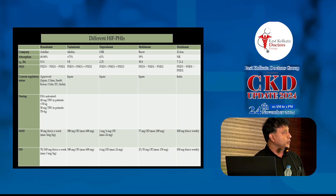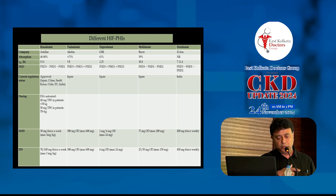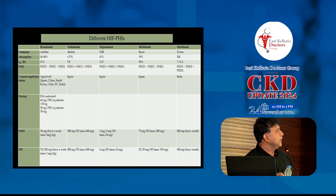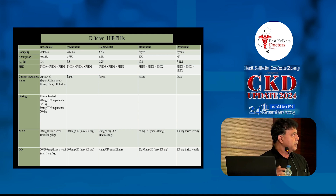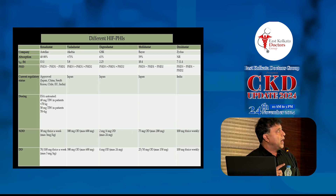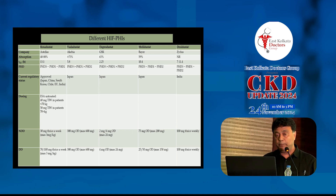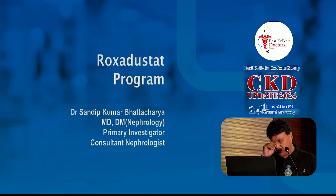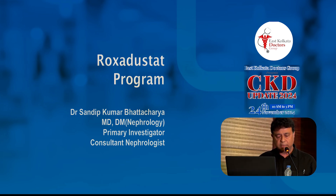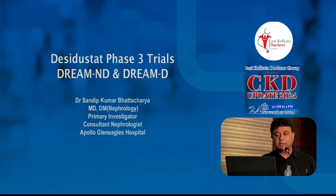There are six HIF-PHI molecules available - most prominently in Japan. Roxadustat was the first molecule, and I was very happy to be part of that global multicentric trial from 2015 to 2018. It didn't get US FDA approval but is expected to get it around 2025. Daprodustat is another molecule I was involved in, included in a global 26-country multicentric phase 3 trial and also a South Asia trial including India and Sri Lanka. Desidustat is our own Indian product by Zydus.